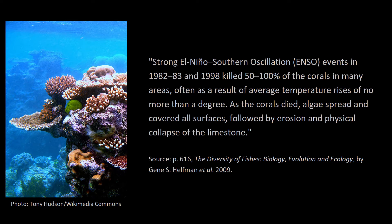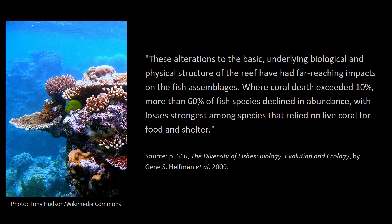Often as a result of average temperature rises of no more than a degree. As the corals died, algae spread and covered all surfaces, followed by erosion and physical collapse of the limestone. These alterations to the basic underlying biological and physical structure of the reef have had far-reaching impacts on the fish assemblages. Where coral death exceeded 10%, more than 60% of fish species declined in abundance, with losses strongest among species that relied on live coral for food and shelter.